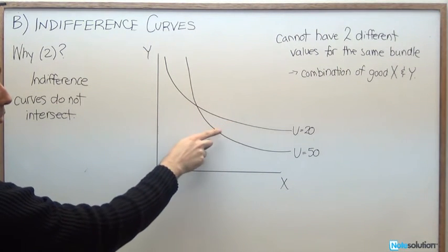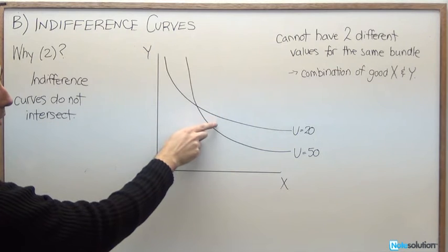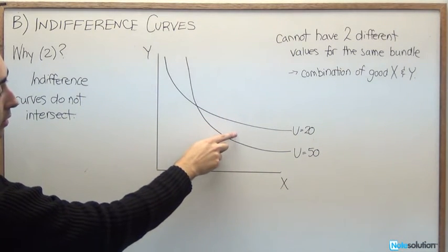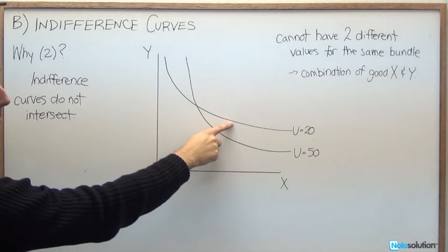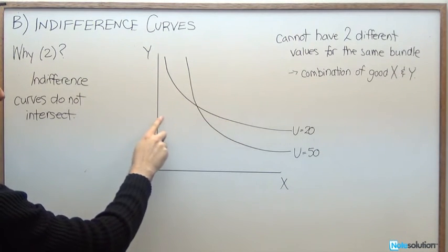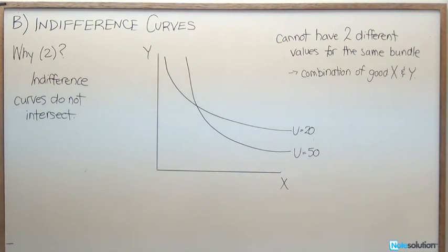But then, at this point, we clearly see that we're going to have more of good Y and more of good X. So if we were consuming this bundle of goods here, then clearly we're going to have more than we did before. So by definition, we're saying we have to be better off.